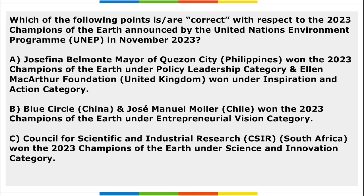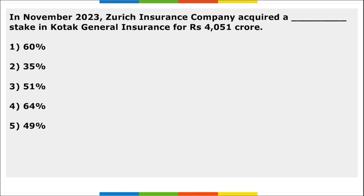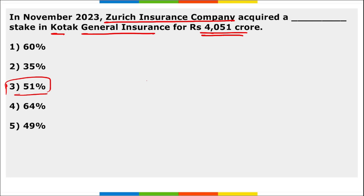All three options are correct with respect to the 2023 Champions of the Earth announced by UNEP in November. Additionally, Zurich Insurance Company acquired a 51% stake in Kotak General Insurance for 4,051 crore rupees. Kotak General Insurance Company is valued at 8,000 crore rupees on a post-money valuation.